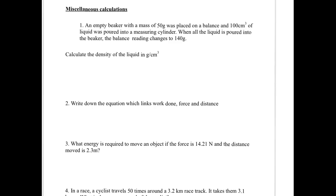An empty beaker with a mass of 50 grams was placed on a balance and 100 centimeters cubed of liquid was poured into a measuring cylinder. When all the liquid is poured into the beaker, the balance reading changes to 140 grams. Calculate the density. So you'll need this formula triangle which is dmv. The best way of remembering this is drunk men vomit. Horrible, but a good way of remembering it. Therefore, density equals mass divided by volume. Make sure you've read the question properly. The mass of the beaker is 50 grams and the total mass is 140. So therefore, the mass of the liquid must be 90. We're dividing it by 100 as that's the volume given to give us 0.9. First question done.